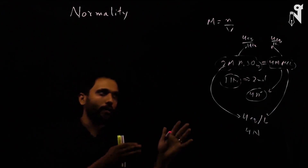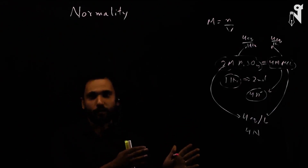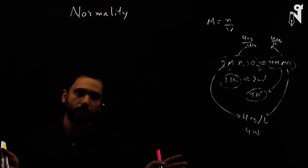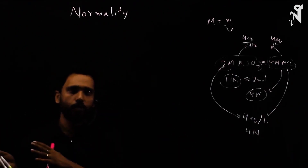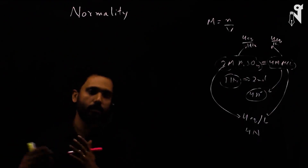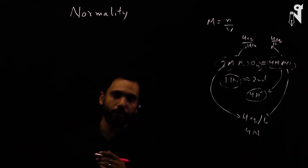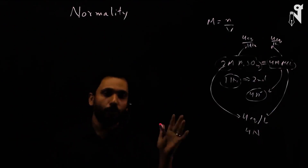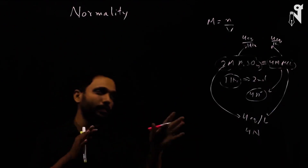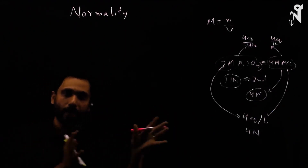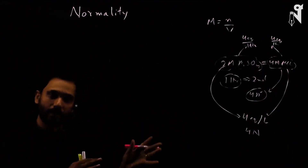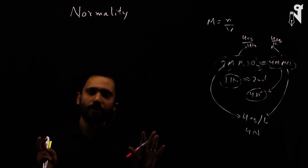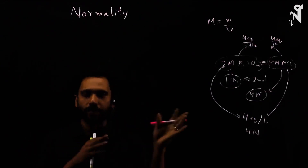Normality is a good way of describing concentration, though we won't use it much in this part of the chapter. For simple acid-base reactions, we can work with moles and do straightforward balancing — for example, 1 NaOH reacts with half of H₂SO₄. But when we get to redox reactions, the balancing becomes trickier and normality becomes more useful.